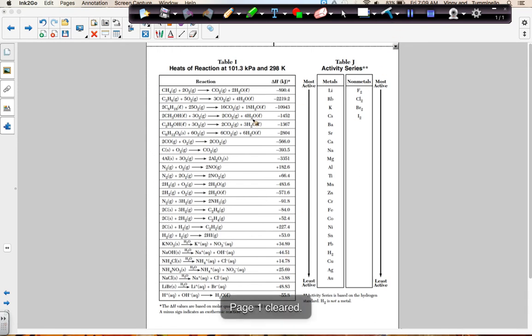Another very important piece of table I is that it says down here, the table H values are based on the molar quantities in the equations. And what that means is that if the coefficient here is a two, that means that this heat value is for every two moles of oxygen. If we wanted it for one mole of oxygen, we'd have to divide the heat value in half.